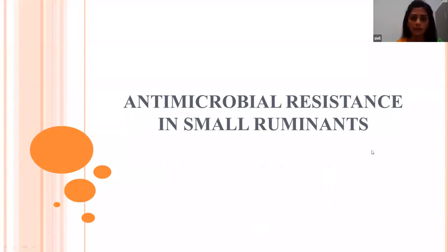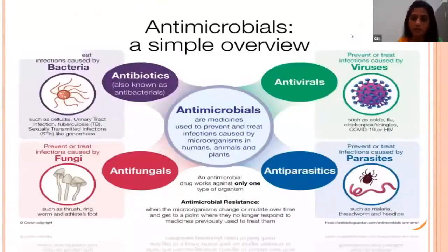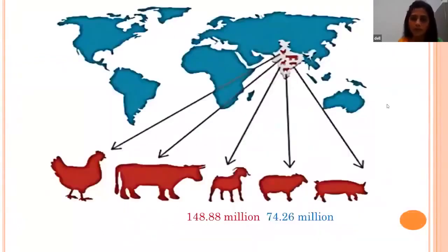Antimicrobial resistance in small ruminants. According to the 20th census, India ranks second in goat population and third in sheep population, holding a total of 148.88 million and 74 million goats and sheep respectively. Sheep and goat are susceptible to many infectious diseases including bacterial, viral, fungal, and protozoal infections. To manage these, we either prevent the disease or use therapeutic management with antimicrobials.